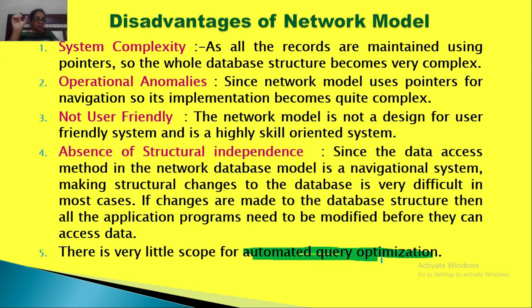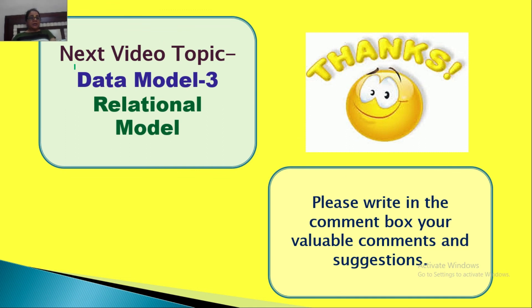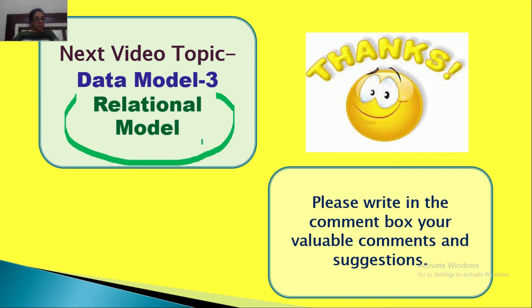There is also very little scope for automated query optimization. For example, finding records of all students who scored below 40% in English is one query — running such queries in a network model is not an easy task because of the complexity arising from multiple pointers. We will be covering the relational model in Data Model Part 3 in the next lecture. I hope you have understood the network model today. Please write in the comment box, check the description for playlists, and do subscribe, like, and share the channel. Thank you so much, bye bye, take care.